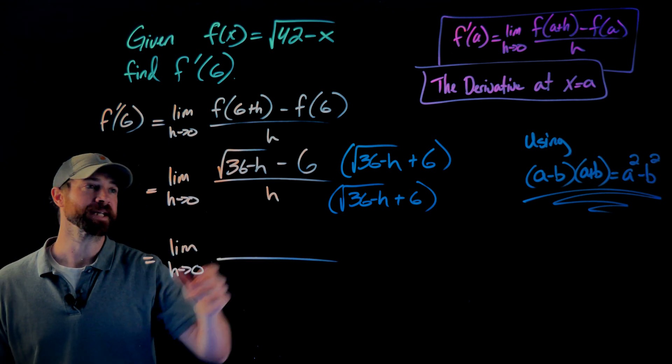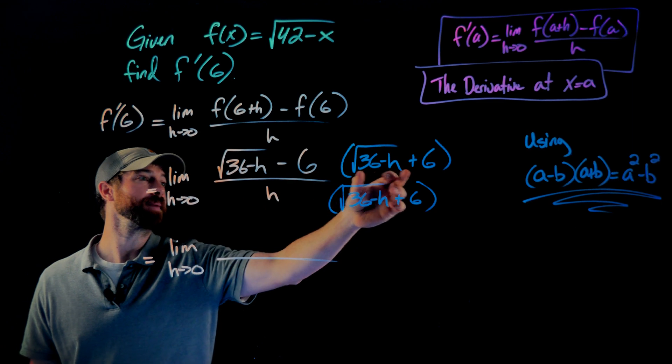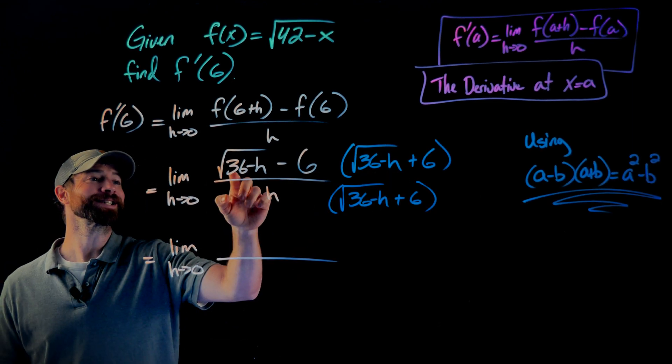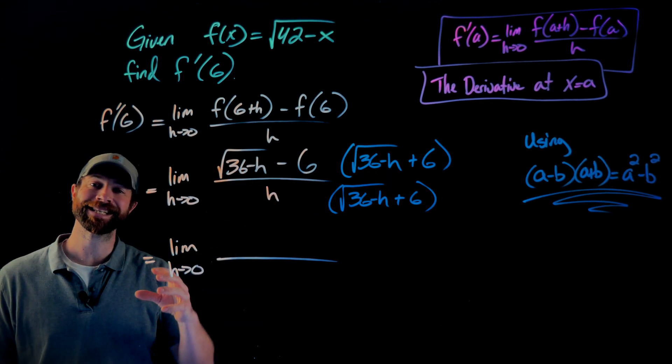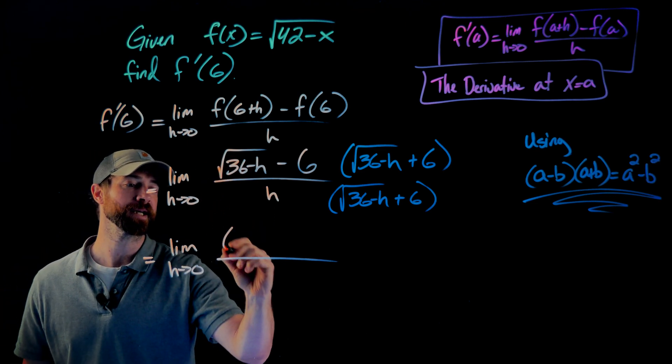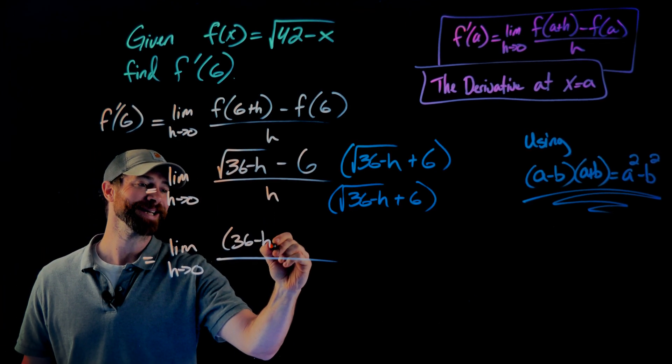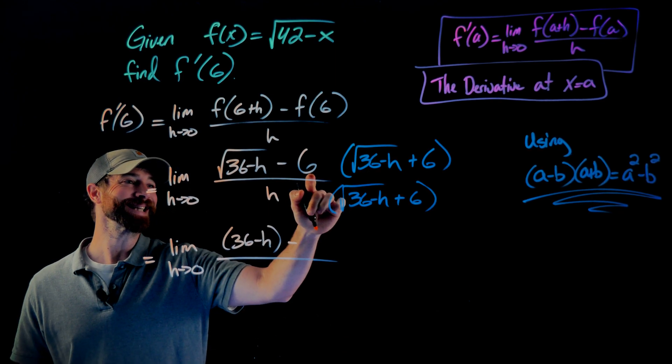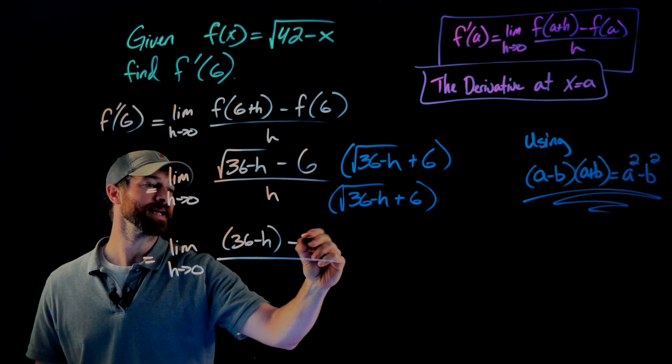So what I get from this, when I multiply this numerator by this conjugate, I'll get the square root of 36 minus h squared, that squared cancels that square root, leaving me here, which is 36 minus h, minus the second term squared, so six squared is 36.